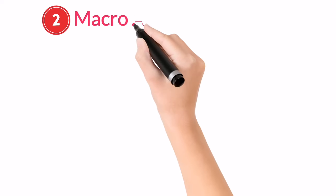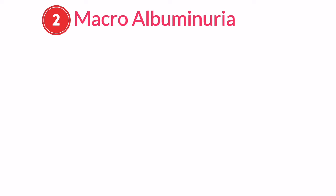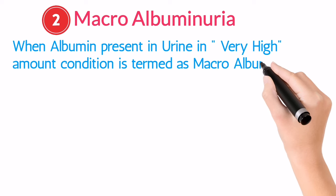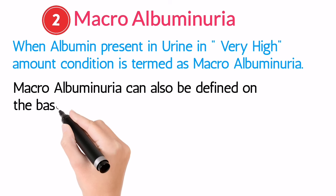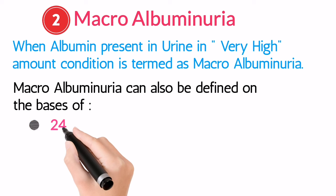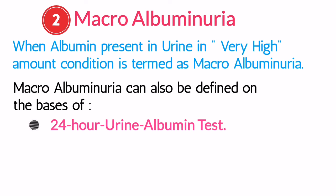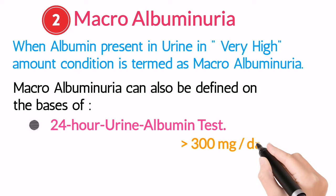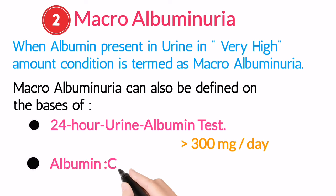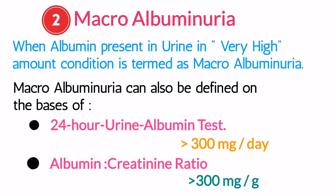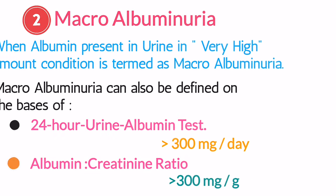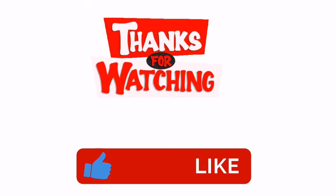The second type of albuminuria is macroalbuminuria. When albumin is present in urine in a very high amount, it's called macroalbuminuria. Same as microalbuminuria, we can confirm it with two lab tests. The 24-hour urine albumin test — if the value is greater than 300 milligrams per day, it confirms macroalbuminuria. The albumin-creatinine ratio test — if the result is greater than 300 milligrams per gram, it also confirms macroalbuminuria. Thanks for watching. Do subscribe, like, and share the video.